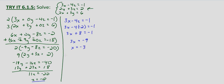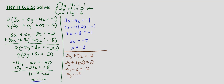Now we have x equals negative 3. We'll solve for y using z equals negative 2 with the second equation 2y plus 3z equals 2. Substituting z equals negative 2: 2y minus 6 equals 2. Add 6 to both sides: 2y equals 8. Dividing both sides by 2, we get y equals 4.